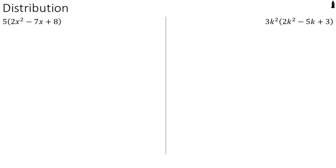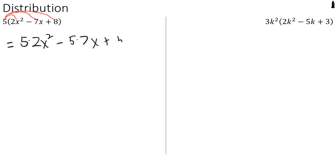Another fundamental rule of polynomials is the law of distribution, which governs the way that multiplication and addition and subtraction interact. When we distribute, we take a multiplication operation and apply it to every single term in a summation. So in this first example, we're going to take our 5, which is our multiplication operation, and apply it to every term inside this summation. So the 5 is going to get multiplied by the 2x squared, the 5 is going to get multiplied by the 7x, and the 5 is going to be multiplied by the 8.